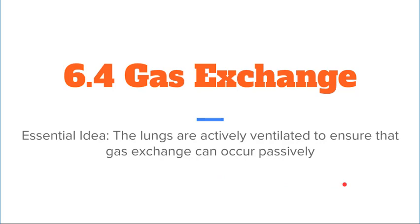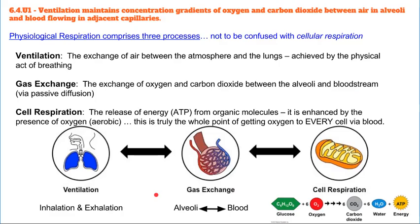The first thing we want to talk about is that ventilation is occurring all the time. We've got three things occurring: ventilation, gas exchange, and cell respiration. Ventilation is the process of bringing fresh air into the alveoli and removing the stale air. It maintains the concentration gradient of carbon dioxide and oxygen between the alveoli and the blood in the capillaries, which is vital for oxygen to diffuse into the blood and carbon dioxide out into the alveoli.